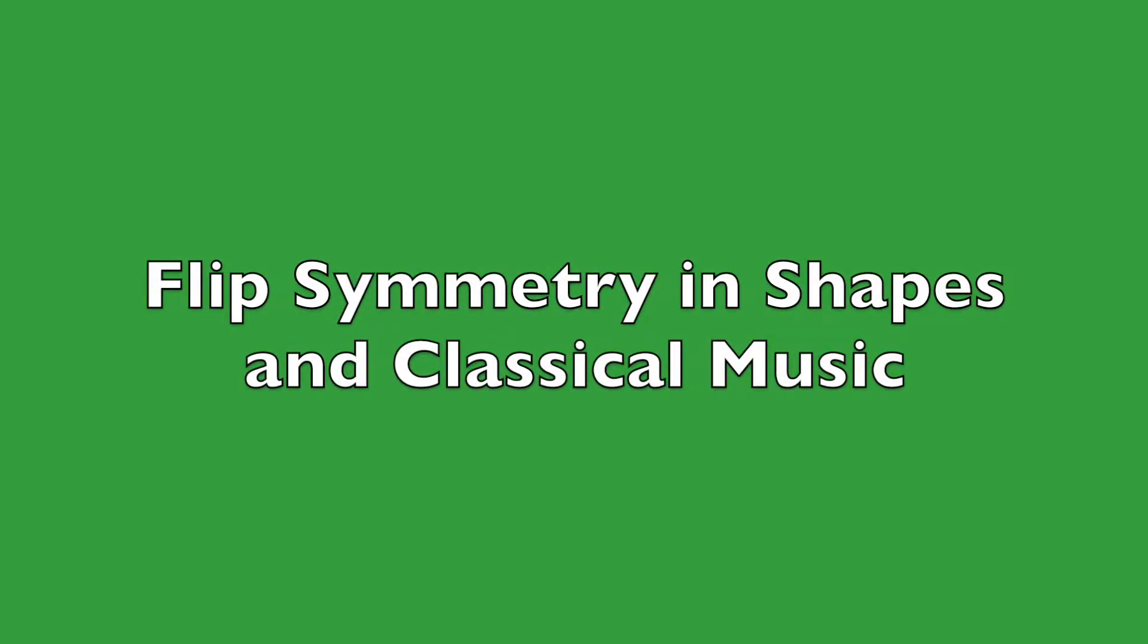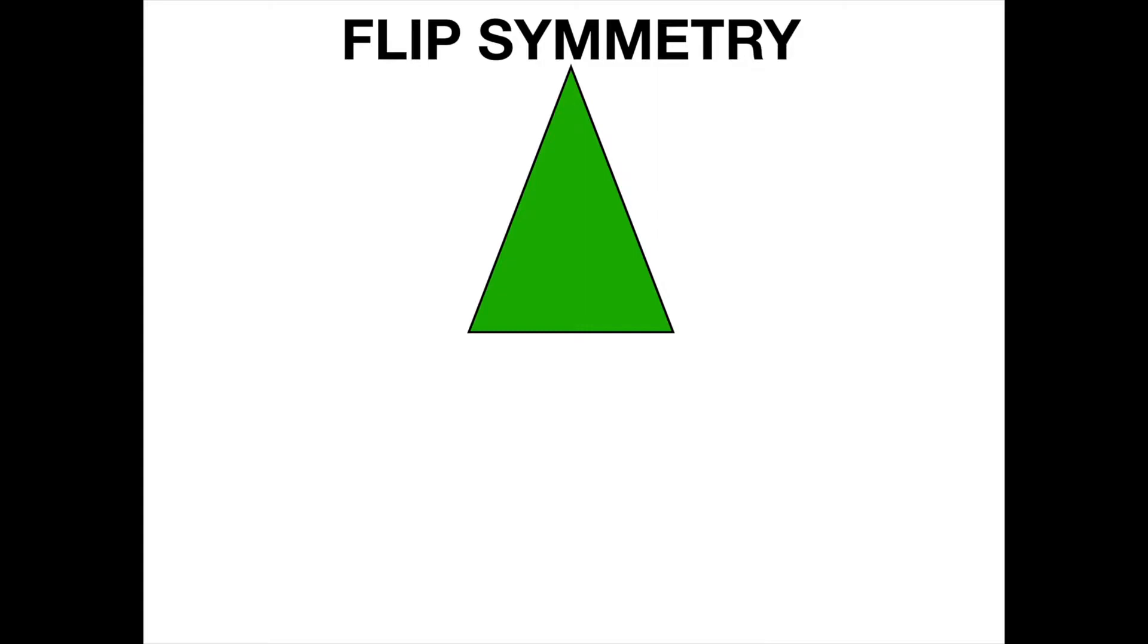Let's start with this triangle shape. With flip symmetry, our second triangle shape is flipping upside down. Even though these two triangle shapes are in different positions, they are still symmetrical because they are the same size, same shape, and same measurement.